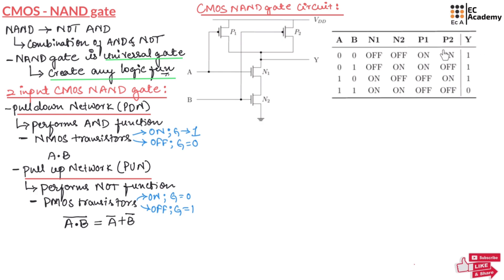So this is the truth table that represents the operation of the CMOS NAND gate circuit. If you observe the output, this output is similar to NAND gate operation.